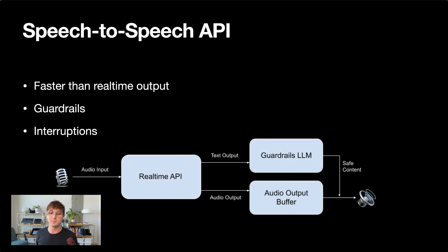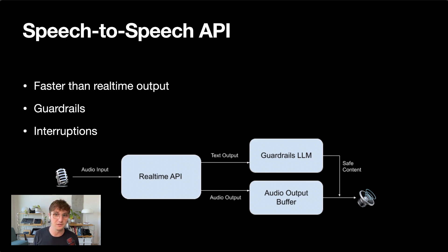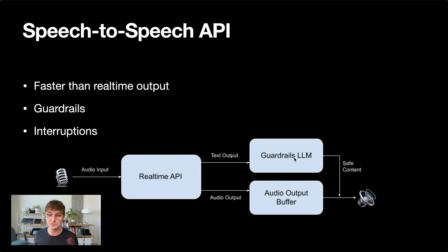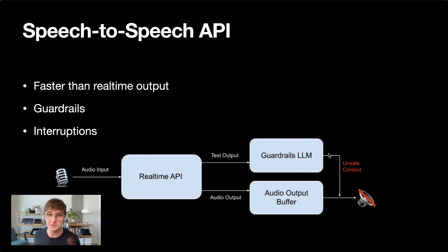And that is if you want to put guardrails on the output. Guardrails are essentially having an LLM or some other system check that the real-time API is not generating content that you don't want it to say — for instance, adult content, or a competitor's name if you were turning this into a real production product. The guardrails can actually check the output by looking at the text, and then produce a true or false signal to say whether the content is safe or unsafe. If the content is not up to standard, you can take the audio output buffer and mute or clear it.